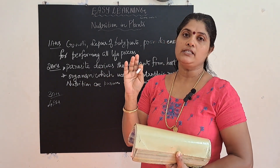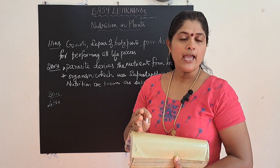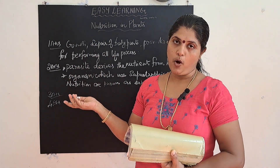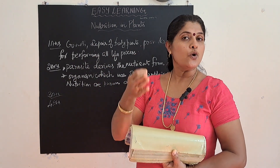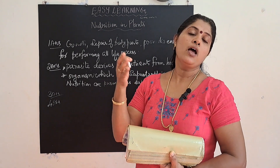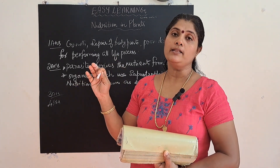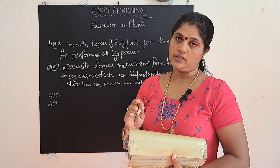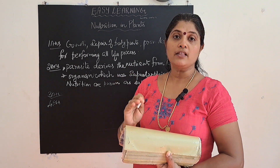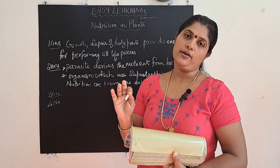Chlorophyll is a green pigment present in the leaf. It helps to absorb sunlight energy and converts carbon dioxide and water into chemical energy, forming carbohydrates. So in photosynthesis, solar energy is converted into chemical energy. Carbon dioxide and water, in the presence of chlorophyll and sunlight, produce carbohydrate and oxygen. Photosynthesis is the method of preparing food by plants by utilizing carbon dioxide and water in the presence of sunlight to produce carbohydrate.